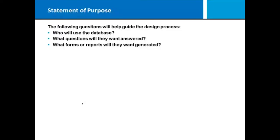Once you have the purpose written, you want to look at the queries, forms, and reports that will be needed, the fields that will be needed, the tables we'll store them in, and what's going to make each record unique. When I do a statement of purpose, I always want to know who's going to use the database — just me, my team, or the public? You've got to know who's using it because you can start thinking about security of the database and who has access to what types of information, and that all has to be part of the design process.